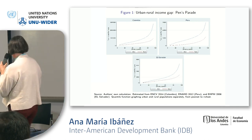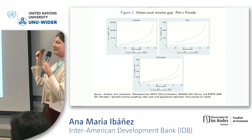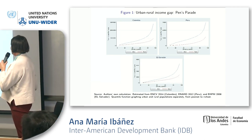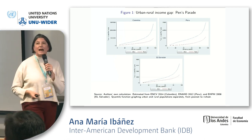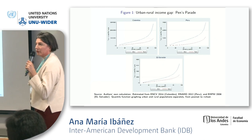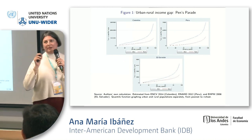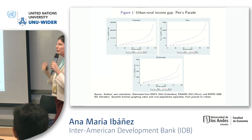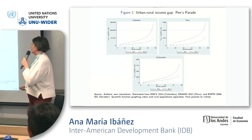Why is this important? Because when you look at the income distribution, what you find first is that there is a large rural-urban income gap. Let's take the case of Peru. In the 10th percentile, the gap between rural and urban income is about two times higher for urban income. When you go to the median, it's about 1.85 times. And when you go much higher, it's about 2.3 times. So you do have a large rural-urban income gap that is persistent across all the percentiles.